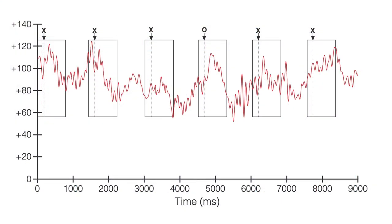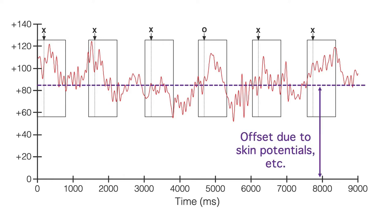Here's an example that shows why baseline correction is necessary. This is 9 seconds of EEG data from an oddball experiment with frequent X's and rare O's. The EEG is riding on top of a bunch of non-neural slow potentials, mainly arising from the skin or from static charges in the electrodes themselves. This voltage offset changes slowly over time, and it can be huge.